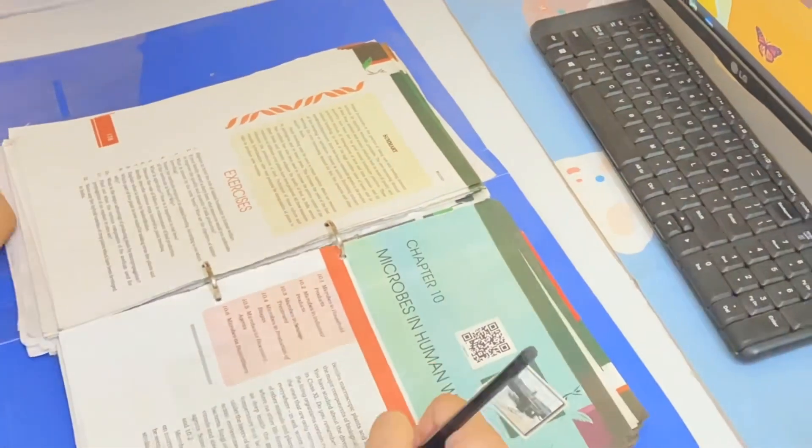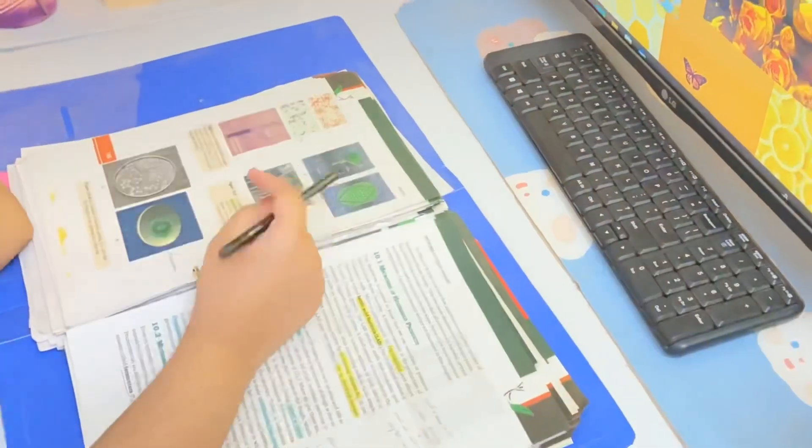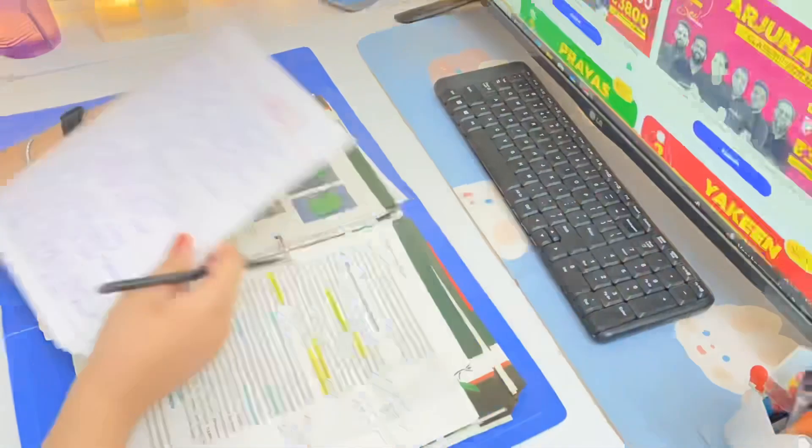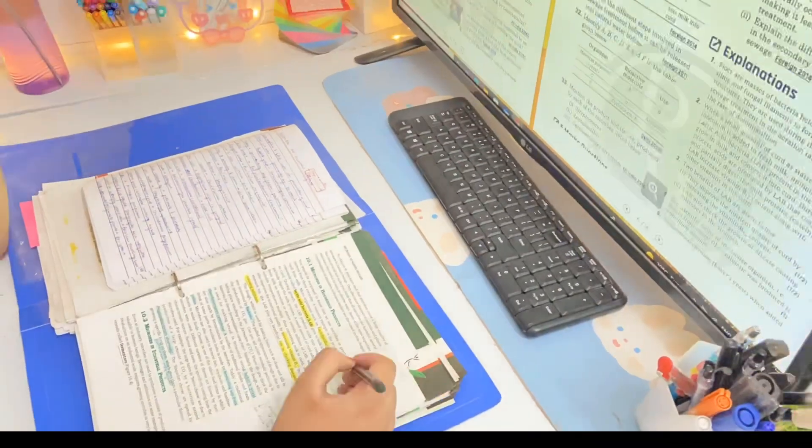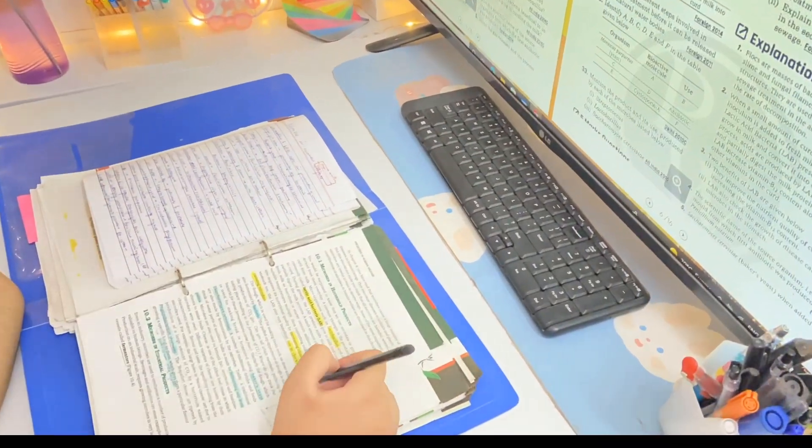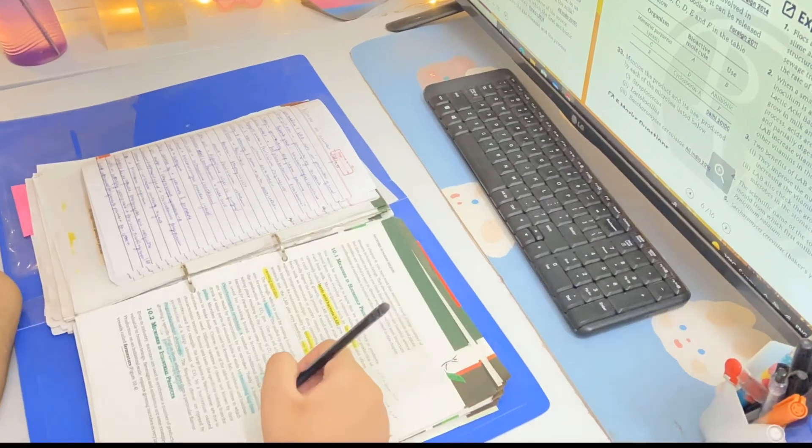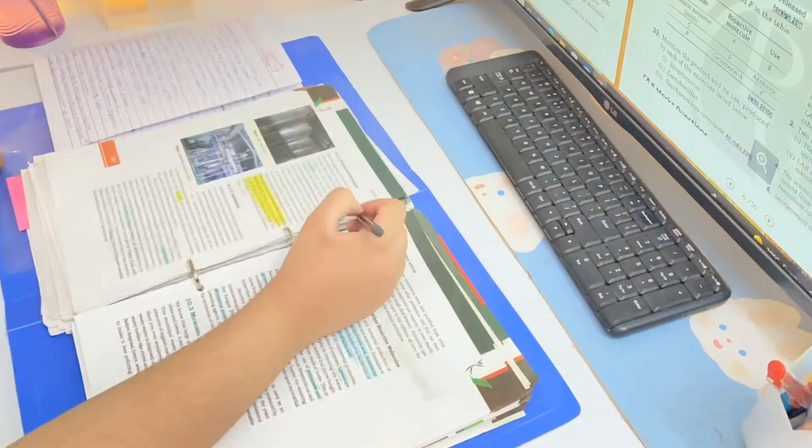So here I'm doing the microbes in human welfare chapter. I've done this chapter a lot of times earlier so it didn't take that long and I've written all the important points in my notebook. I'm reading NCERT here and revising those points as well.